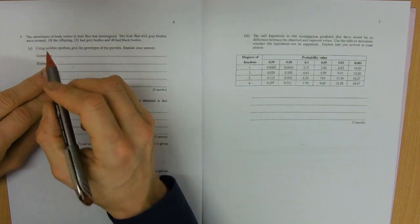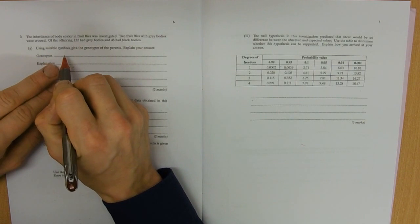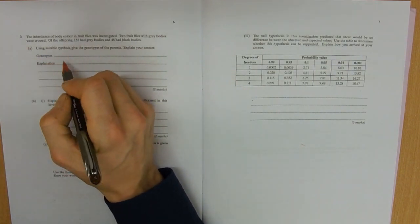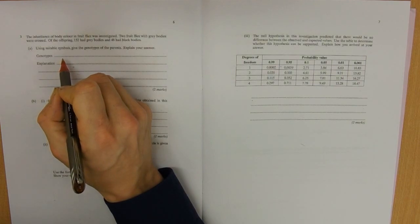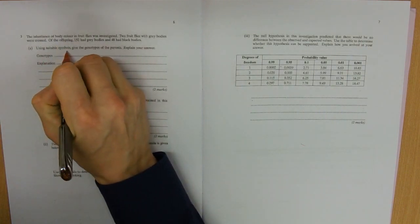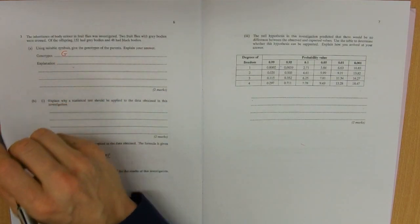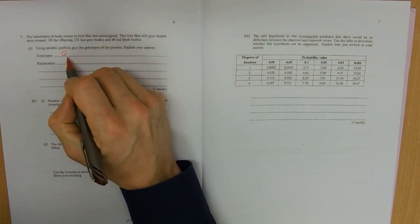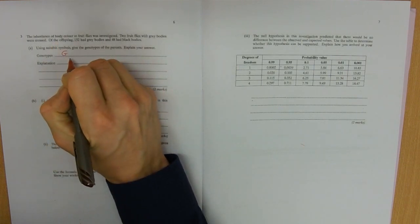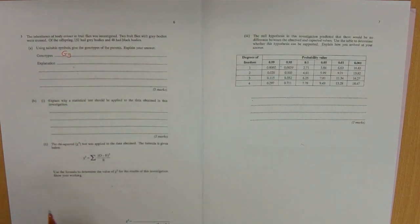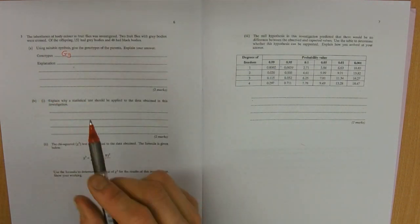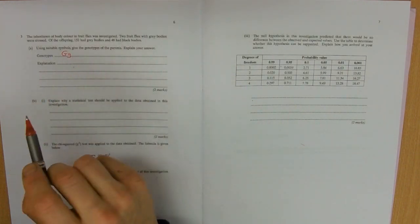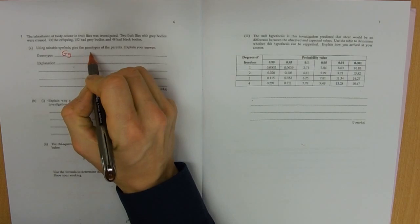Our genotypes of our original two - we need to pick some allele names. We're going to follow the convention of the dominant allele giving us the letter. Big G for grey and then black, I'd like to use little b but I've got to follow the rule that the two letters are the same, so I'm going to have a little g there. That's the genotypes of the parents, they're both the same.